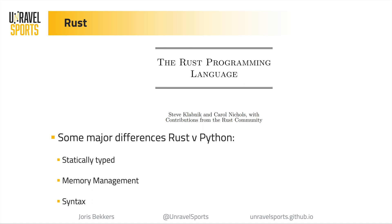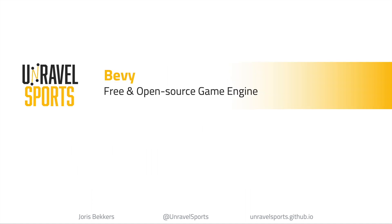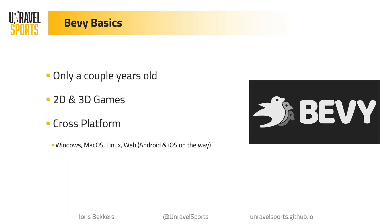Now we get into Bevy. Bevy is a package built in Rust and it's a free and open source game engine. It's only been around for a couple of years, so that's a positive, but also a little bit of a negative because it's still in full development — I think it's currently at like version 0.1, so it's really early stages. You can use it to build 2D and 3D games, it's cross-platform, although not yet for mobile, but that's coming apparently.